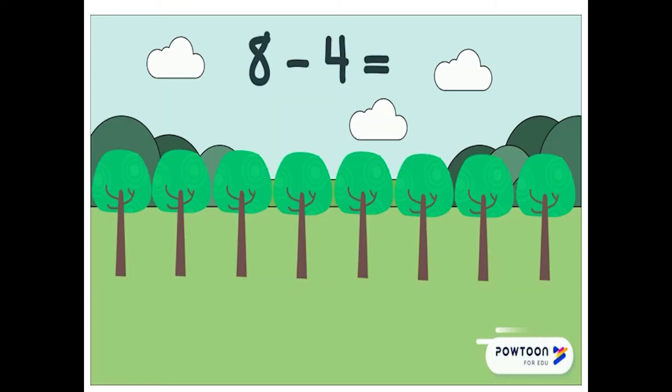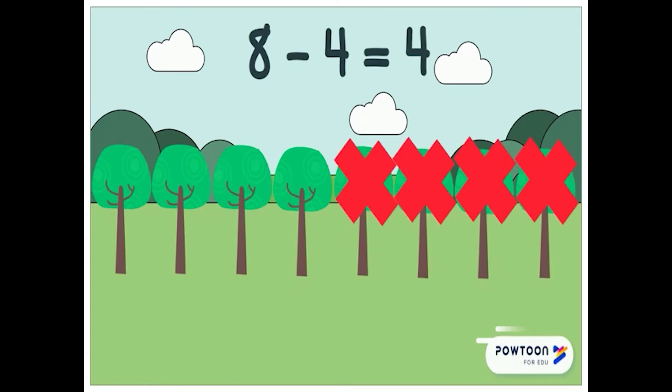Let us see one more example. Here we have eight trees. If I cross out four trees, then how many trees are left? Yes, four trees are left. So eight minus four is equal to four.